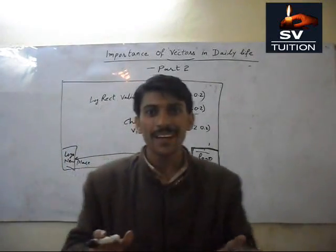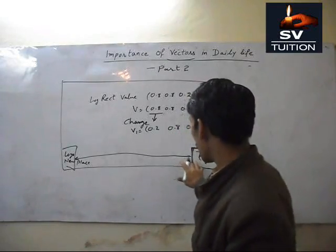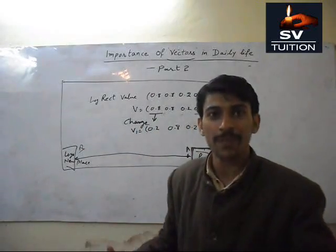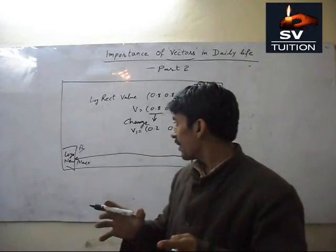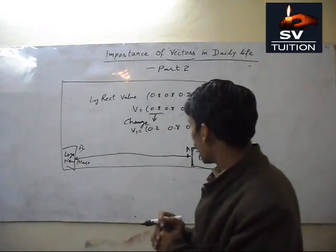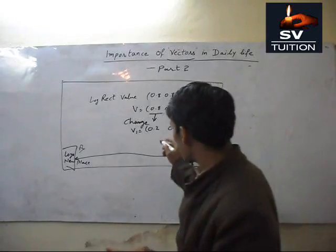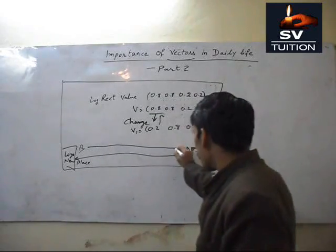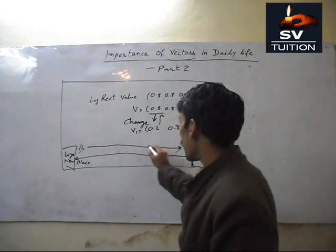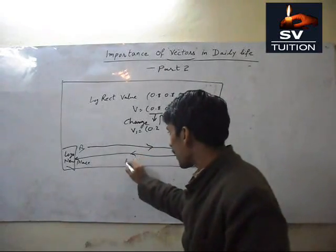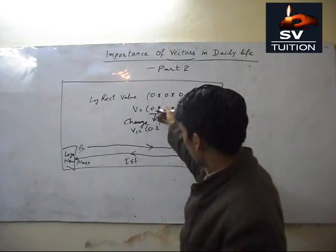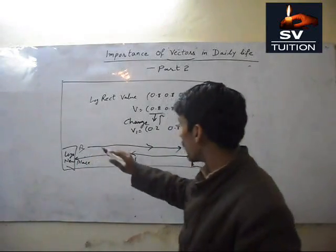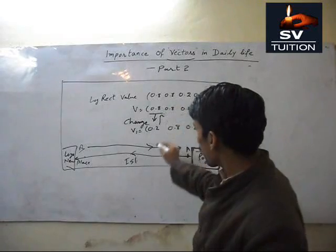I saw that my logo shifted from point A to point B — I am very happy that my learning is going practical! I again changed values and my logo shifted back from B to A. First I changed 0.8 to 0.2 and it went to B, then I changed 0.2 back to 0.8 and it returned to A.